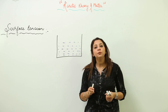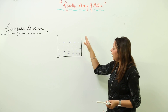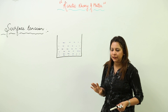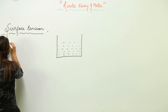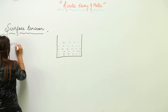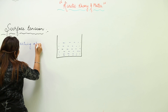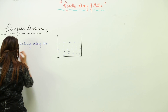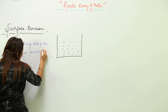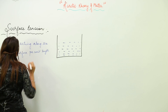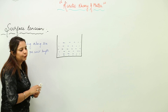Now we are going to start with an important phenomenon: surface tension. Suppose I have a beaker with water in it. Surface tension is defined as the force acting along the surface per unit length, or you can say force acting per unit length along the surface is called surface tension.